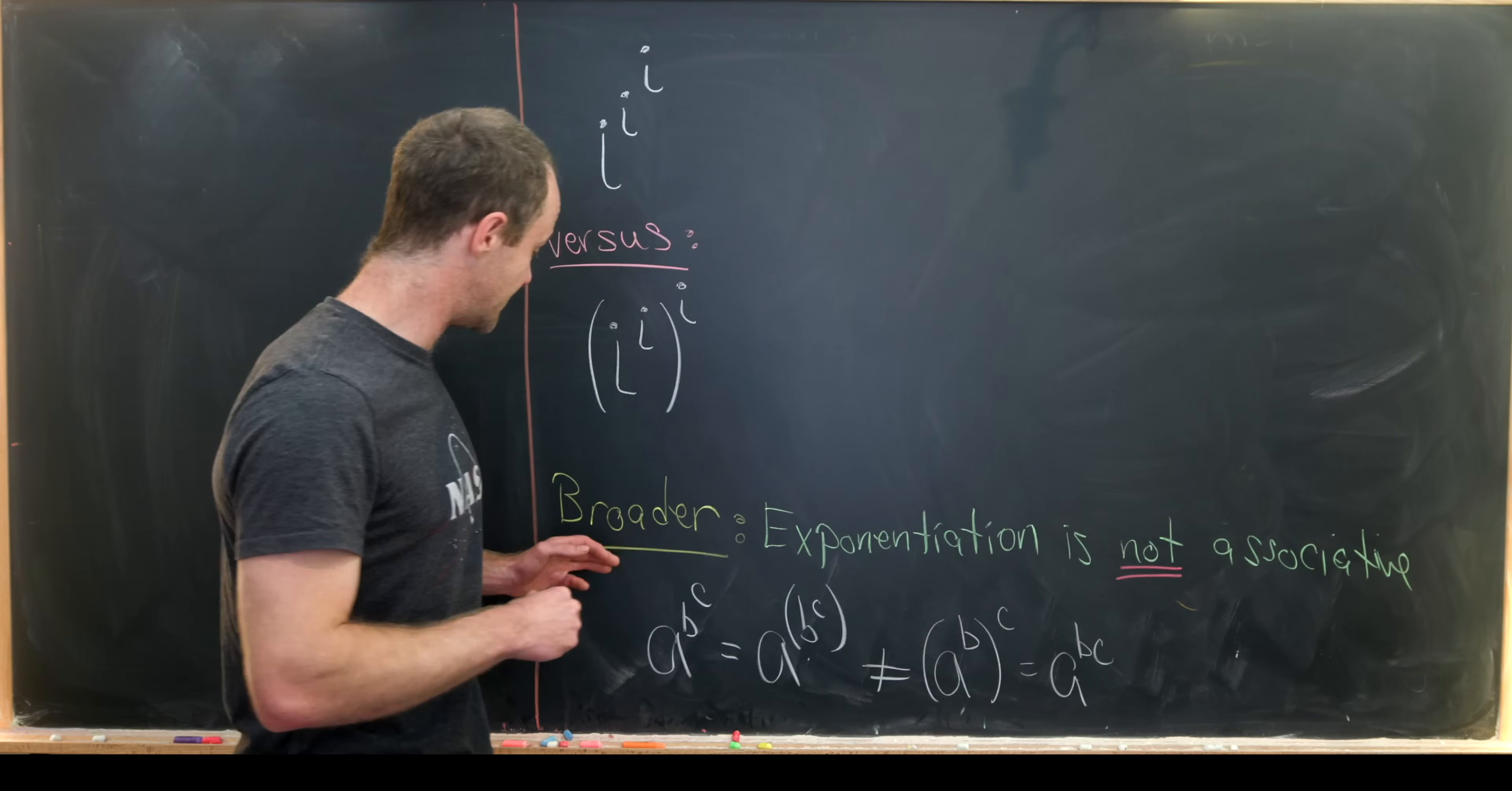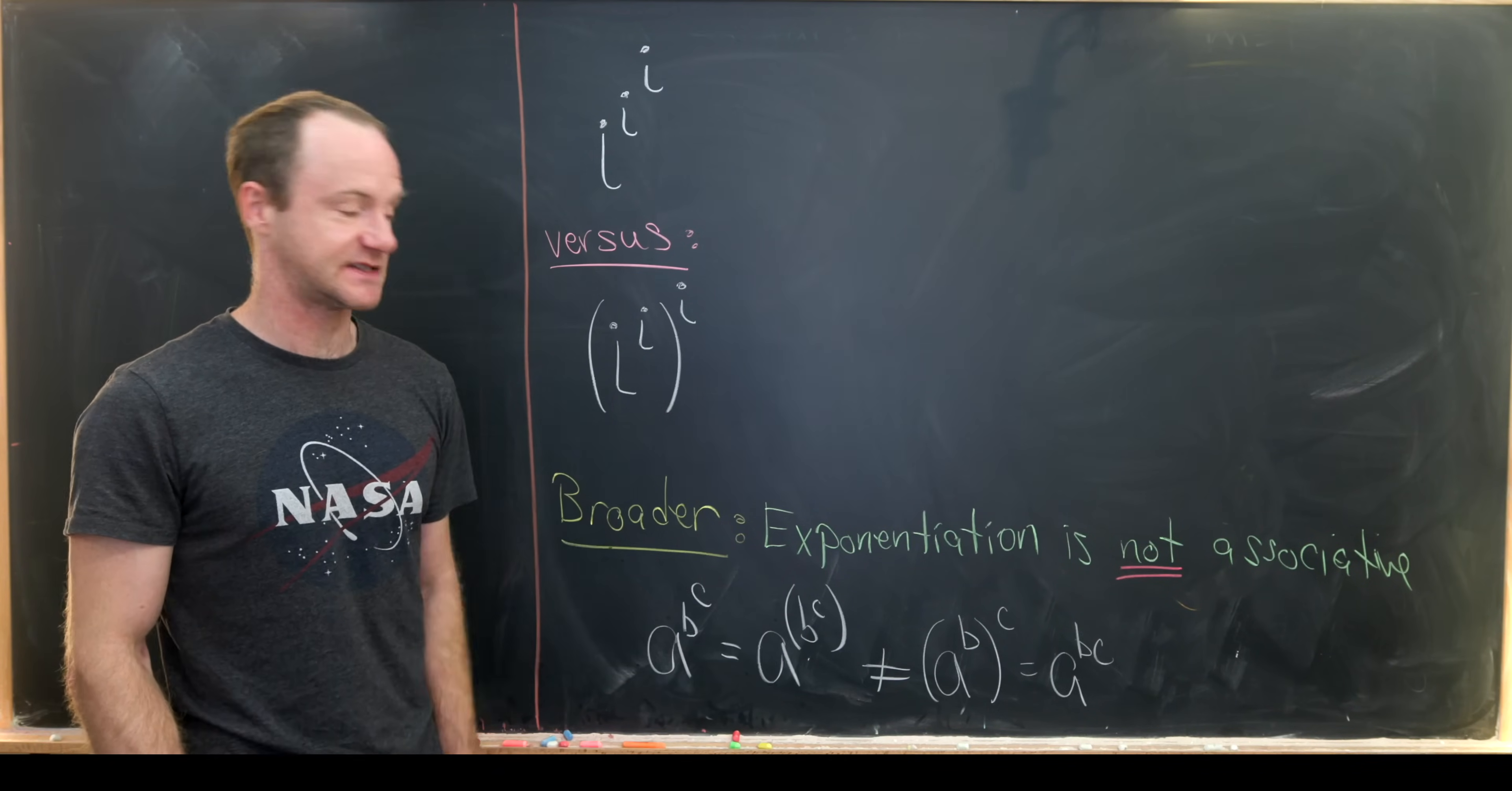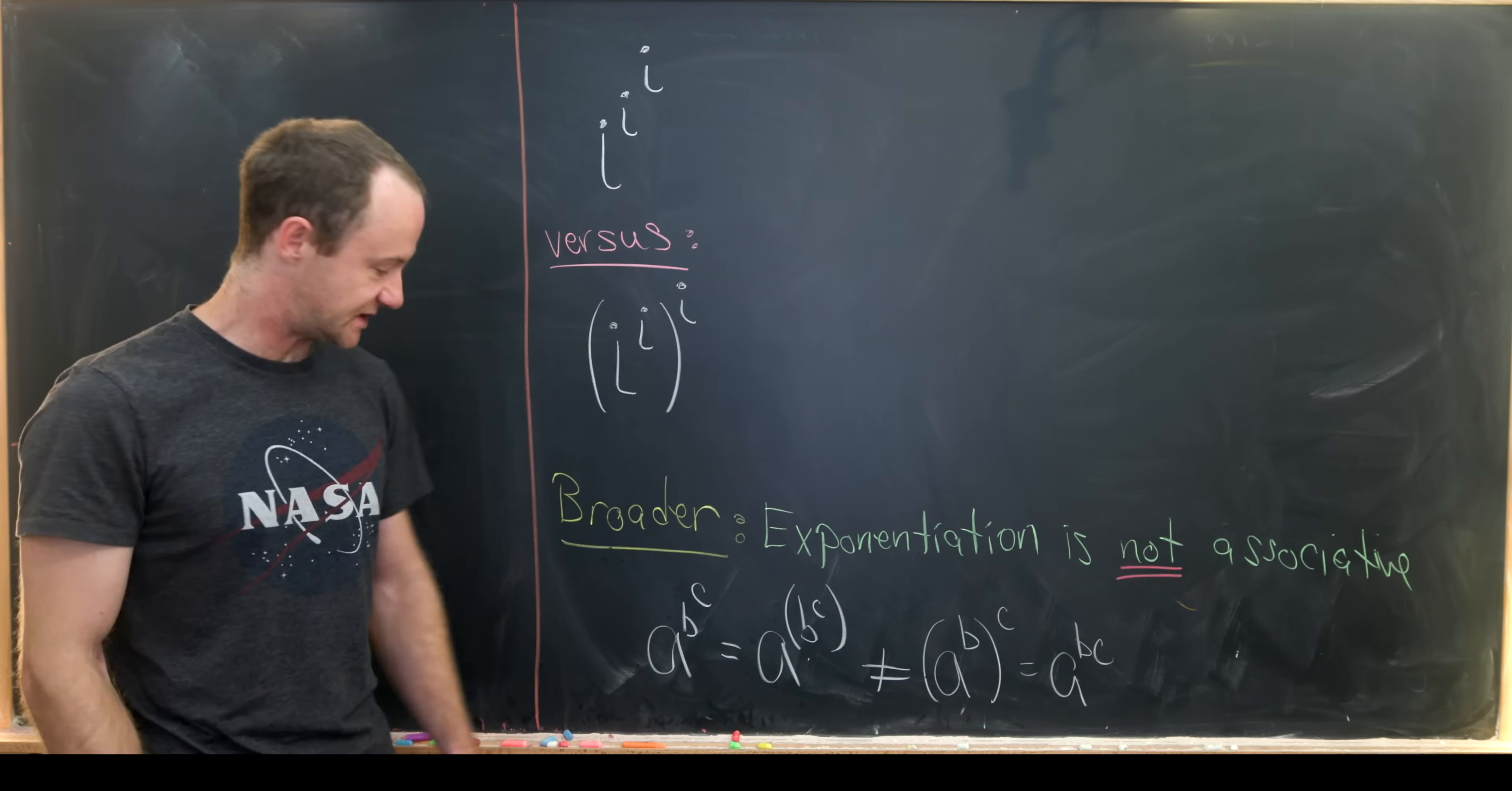And the mistake comes from this broader fact that exponentiation is not associative. And what I mean here is when we write a to the b to the c, what we really mean is a to the power of b to the c. But that's not the same as a to the b power and then raised to the c, because by exponent rules that's a to the bc. So if you write it like this with these sets of parentheses, it's clear that we have non-associativity.